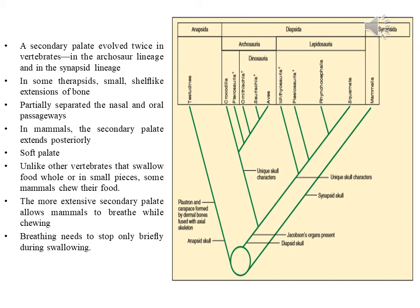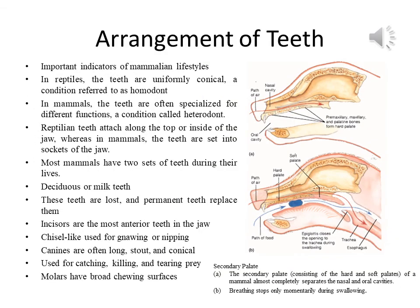Breathing needs to stop only briefly during swallowing — when you are swallowing food, you cannot breathe. Arrangements of teeth are important indicators of mammalian lifestyle.